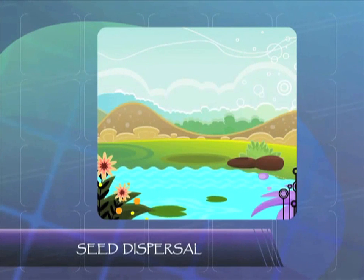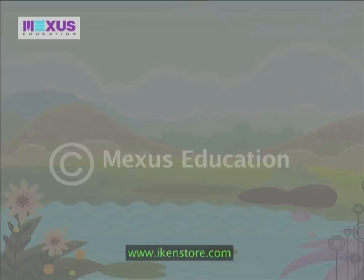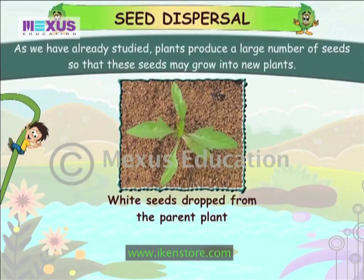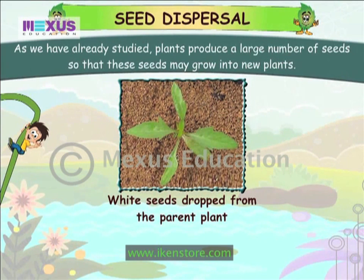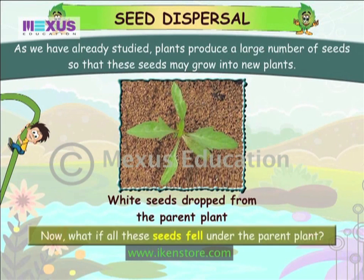Seed dispersal. As we have already studied, plants produce a large number of seeds so that these seeds may grow into new plants. Now, what if all these seeds fell under the parent plant?